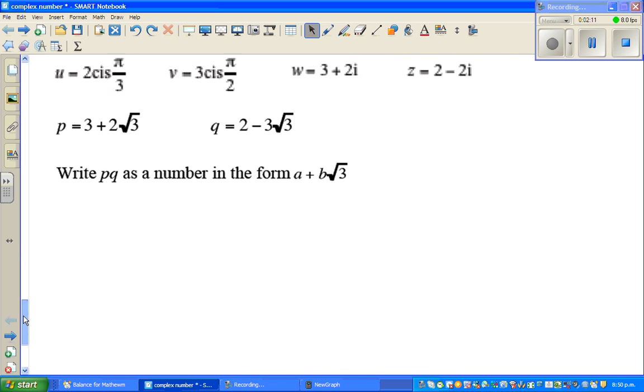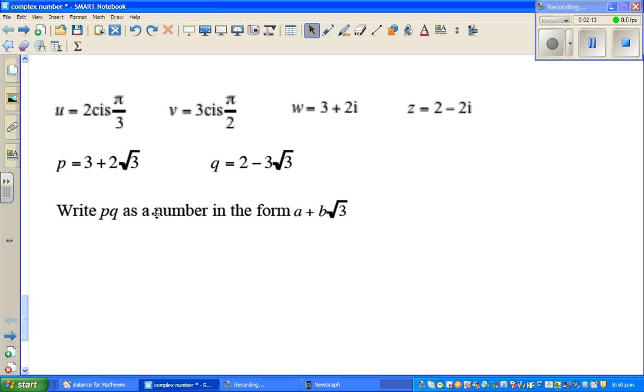Now moving on to the next question. You want to multiply P and Q and to write in this form, A plus B root 3. So P is 3 plus... so this is, do a little of algebra, so this is 3 plus 2 root 3 times 2 minus 3 root 3.